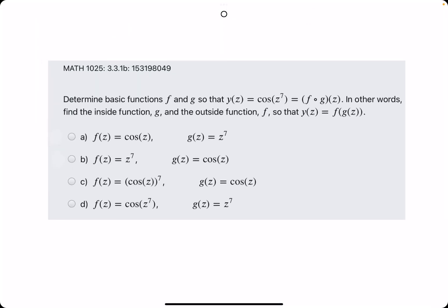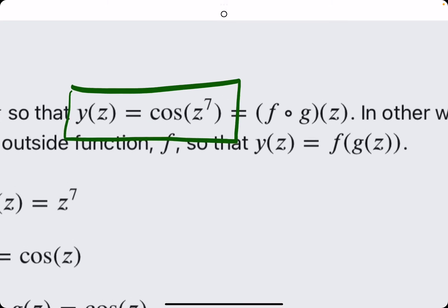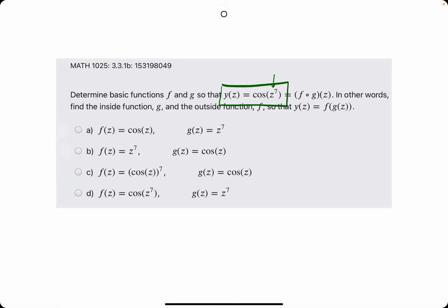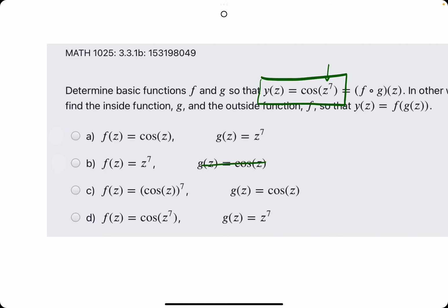All right, let's go ahead and do one more, maybe a little faster. So again, g is always the inside function. So we're looking at in this case y of z. If we had to pick something that was on the inside, well in this case it would likely be z to the seventh. So we can eliminate the ones that don't have a g function of z to the seventh.